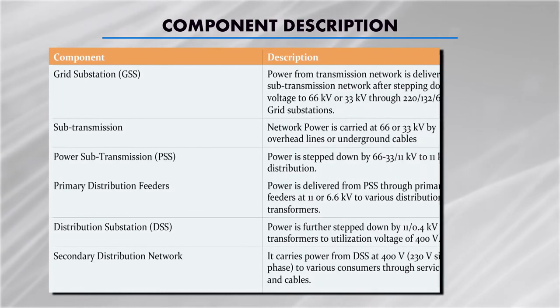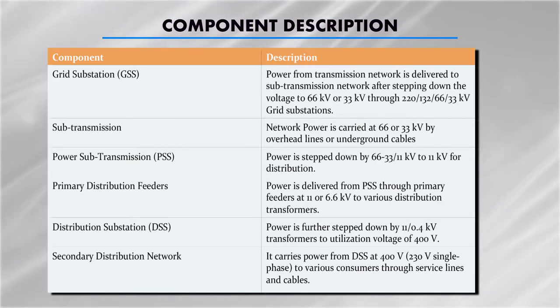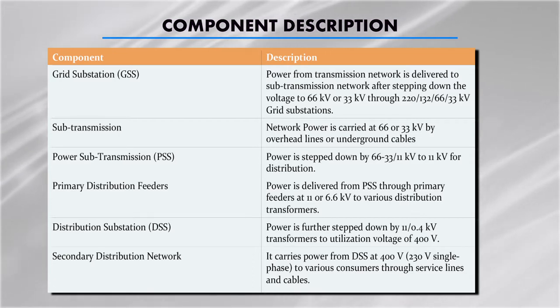Power is generated at some voltage — suppose 11 kV — and transmission is done at very high voltages. Then up to distribution you have to reduce these voltages, because at the distribution end the voltage is kept low: 400 volt or 220 volt single phase supply which comes to the consumer end — at homes, various industries, or hospitals. It can be three phase supply or single phase supply, and this constitutes the complete network of the power system.